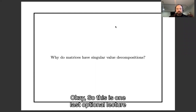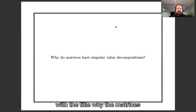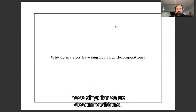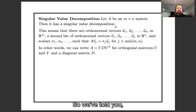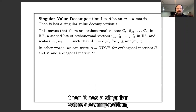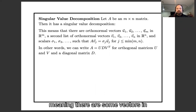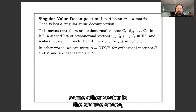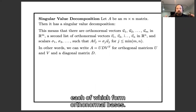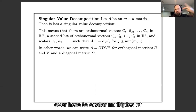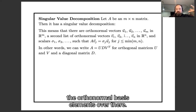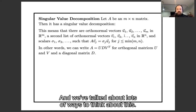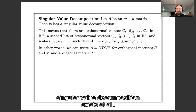This is one last optional lecture with the title: why do matrices have singular value decompositions? Most of this week we've been talking about the fact that if you have a matrix, it has a singular value decomposition — meaning there are some vectors in the target space and some other vectors in the source space, each of which form orthonormal bases, so that A takes the orthonormal basis elements here to scalar multiples of the orthonormal basis elements there. But we haven't told you why singular value decompositions exist at all.